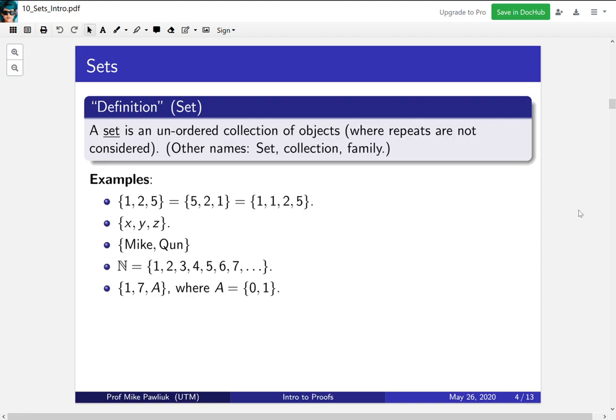The set {x, y, z}, the set {Mike, Chun}, and the natural numbers are all good examples of sets. And then the last one is maybe the most strange, the set {1, 7, A}, where A is itself a set. It's the set {0, 1}. So we're going to look into that in a little more detail.